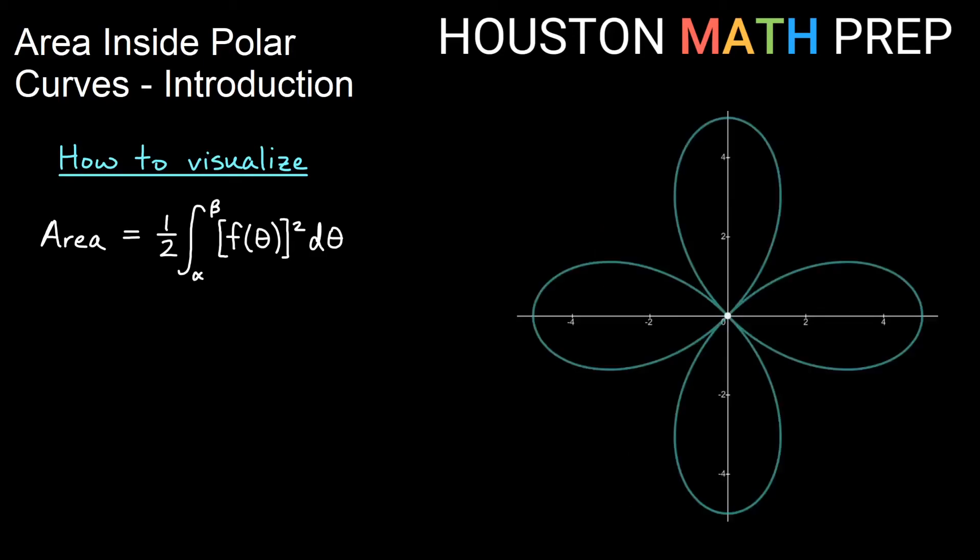Here I have another polar curve. We can use this type of symmetry in many different examples. So here imagine filling one petal of this curve with sectors with wedges coming out from the pole to the curve itself. And we could take the area of one petal, multiply by 4, and get the actual area inside the entire graph here.